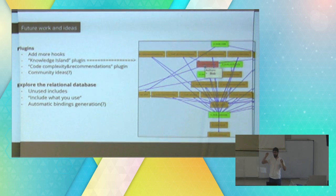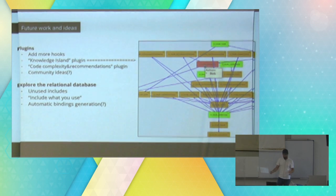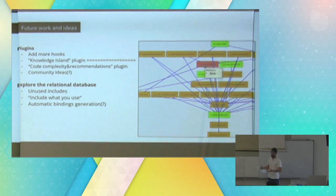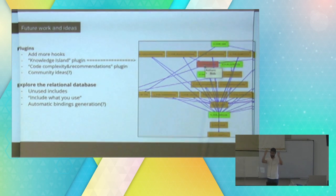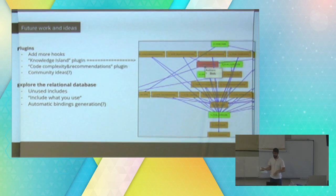Include-what-you-use kind of tools: say you have component A depending on component B, and component B depending on component C. In component C you can be using entities from component A but not including them directly. If you don't want to rely on transitive includes, you can create a tool to require an explicit include from component C to component A to solve this kind of issue.